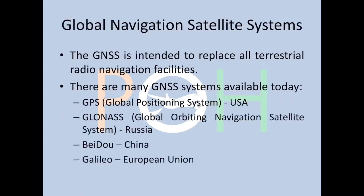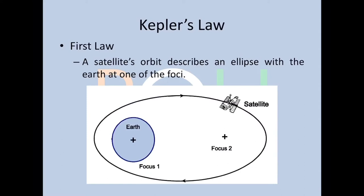GNSS of course stands for Global Navigation Satellite System. The idea is to replace all the terrestrial radio navigation facilities such as VOR and DME. There are many GNSS systems available nowadays: you have GPS of the USA, GLONASS of Russia, BeiDou of China, Galileo of the European Union. Certain other countries are developing their own regional systems — for example, India has GAGAN.